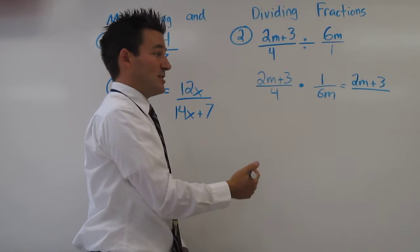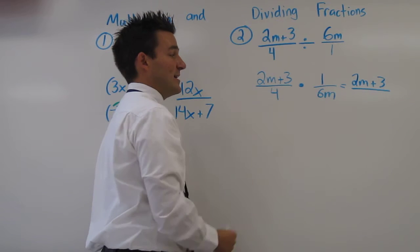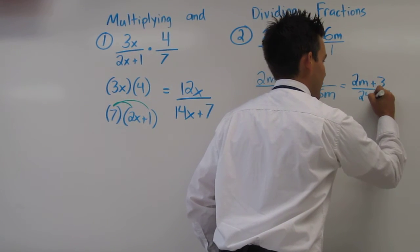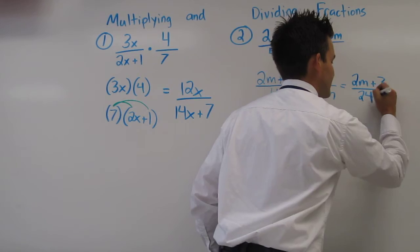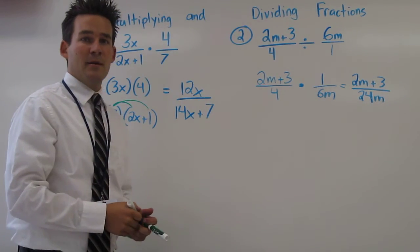Now, we're multiplying the denominators. 4 times 6m is 24m.